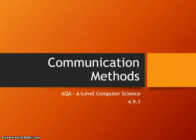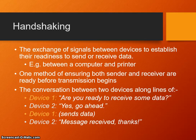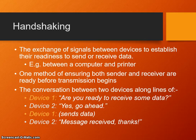Lastly in this section on communication methods, we're going to look at handshaking. Handshaking is a type of protocol — the exchange of signals between devices to establish the readiness to send or receive data. Imagine a computer and a printer: the computer asks 'are you ready to receive some data?', the printer replies 'yes, go ahead', the computer sends the data, and the printer responds 'message received, end of transmission' before returning to a ready state. Alternatively, the printer might say 'no, I'm out of paper', and the computer will wait. That is handshaking.